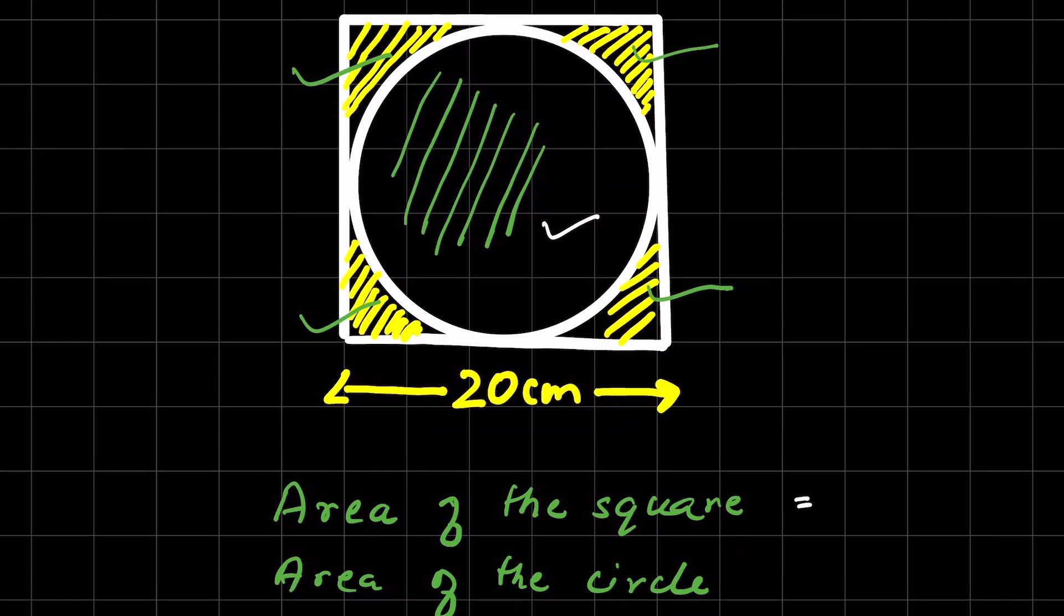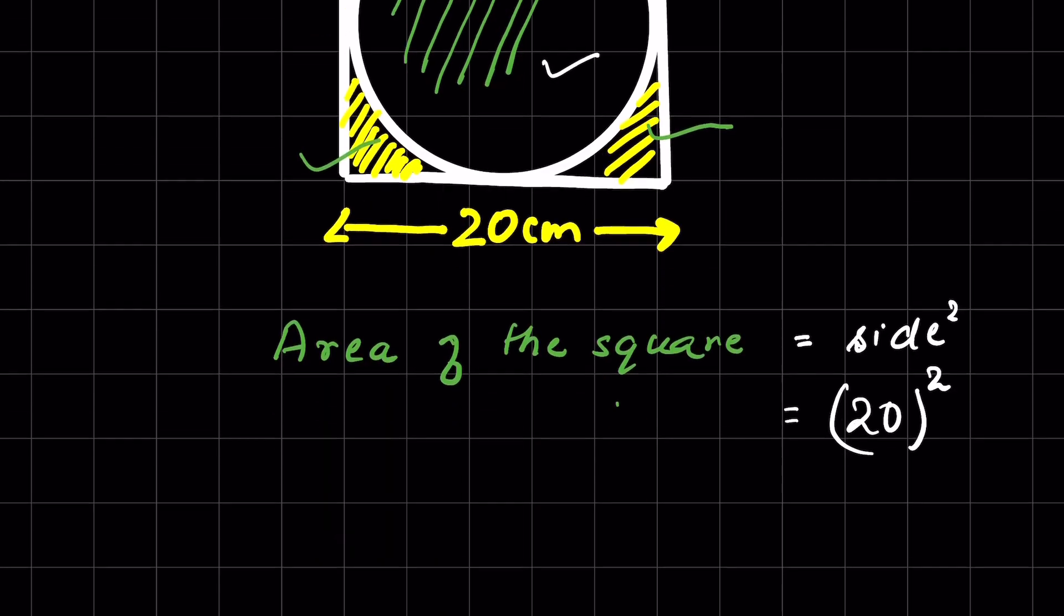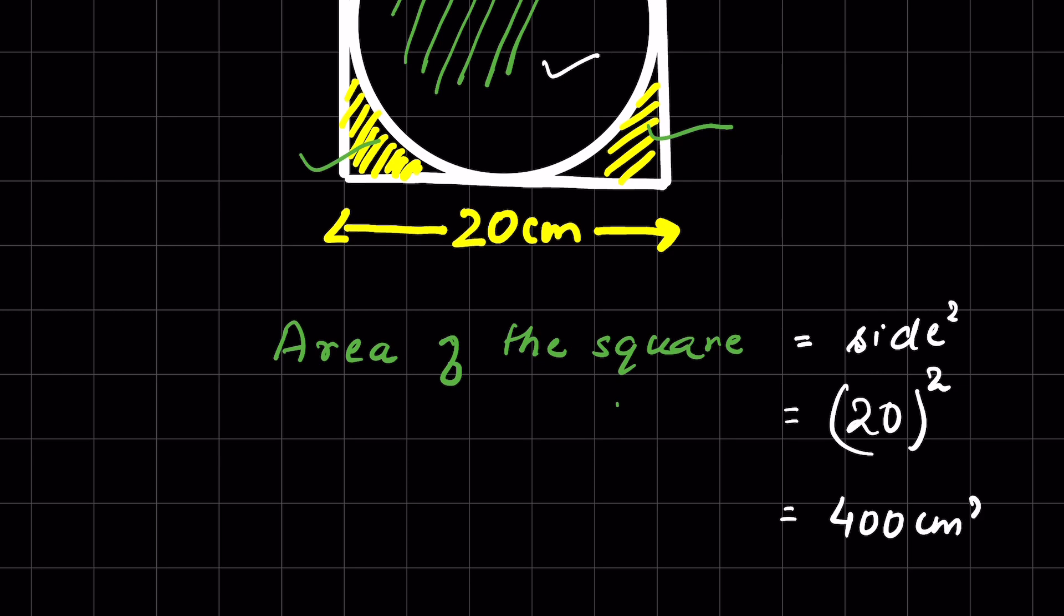Area of the square, the formula is side squared. Here the side given is 20 centimeters, so it will be 20 squared. 20 squared is 400 centimeters squared, which is the area of the square.